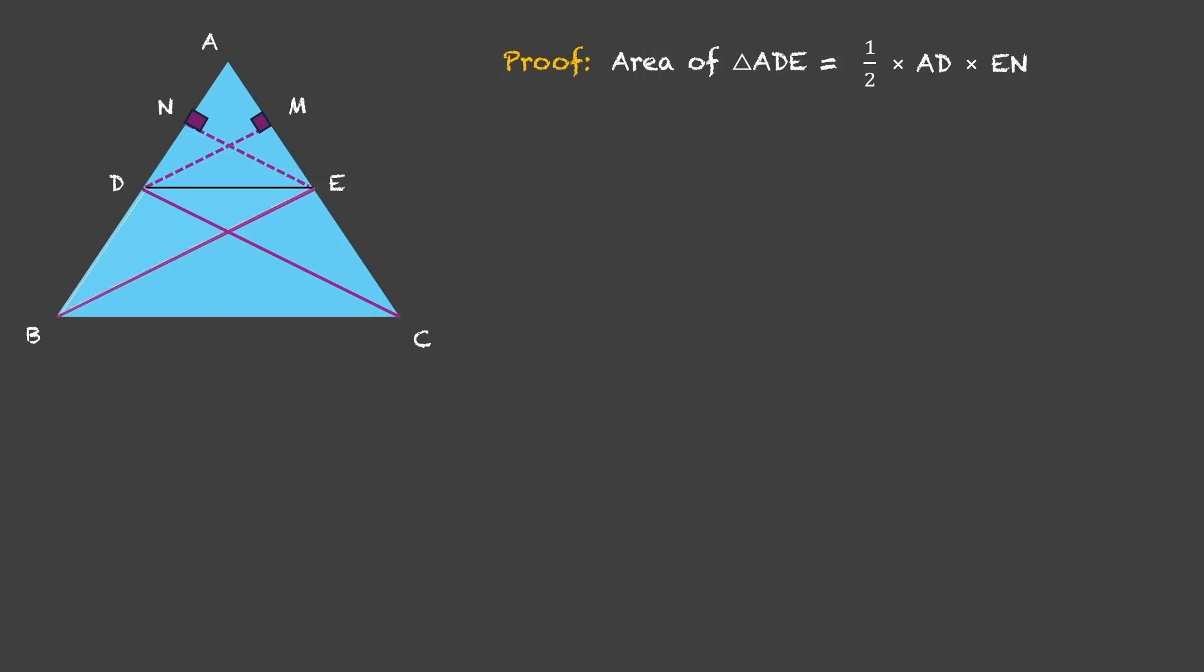Now, this is an obtuse triangle. Angle D is greater than 90. Let us do one thing. Let us bring it down along with this altitude. In an obtuse triangle, the altitude lies outside it. Right? So, this is the side BD. This is A and this is N. So, its area will be given by half into BD into EN. Correct?